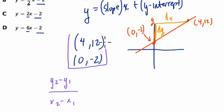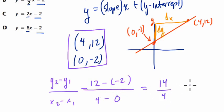I have the points set up like this. I'm going to say 12 is y2. So y2 minus y1 would be 12 minus -2, divided by 4 minus 0, and that gives me 14 over 4. If we reduce that, it's 7/2, and that's our slope.